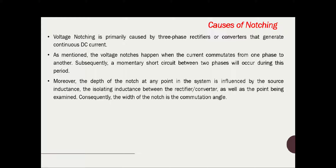Voltage notching is primarily caused by normal operating devices like three-phase rectifiers or converters that generate continuous DC current. Voltage notches happen when the current commutates from one phase to another, and subsequently a momentary short circuit between two phases will occur during this period. Moreover, the depth of notches at any point in the system is influenced by the source inductance and the isolating inductance between the rectifier or converter and the point being examined.